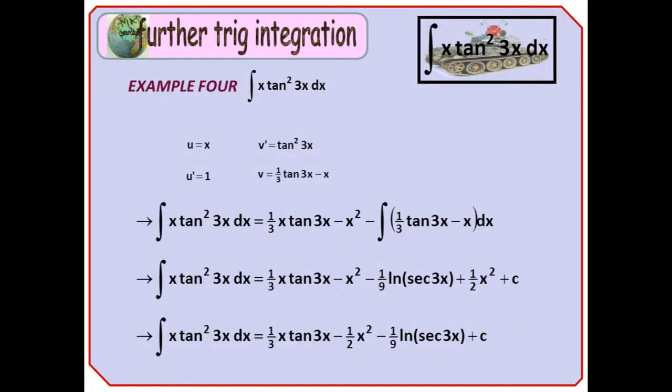And so to example 4, for which I suggested that example 3 was going to set us up. Example 4 is the integral of x tan squared 3x, which is just x multiplied by tan squared 3x, and requires us to use the method of integration by parts. I'm going to choose u as x, so u dash is 1, and that leaves us with v dash equals tan squared 3x. So v is a third tan 3x minus x, which I've just stolen from example 3.